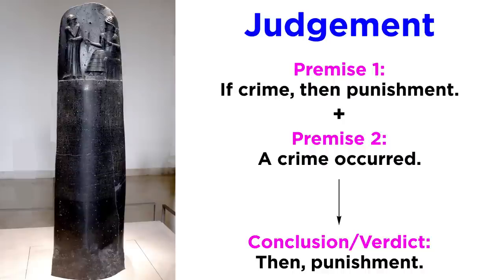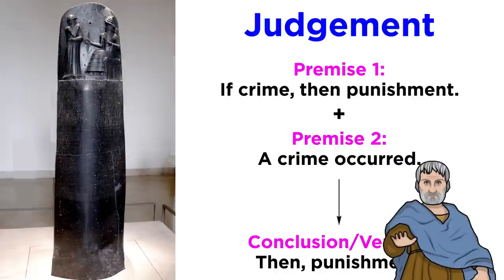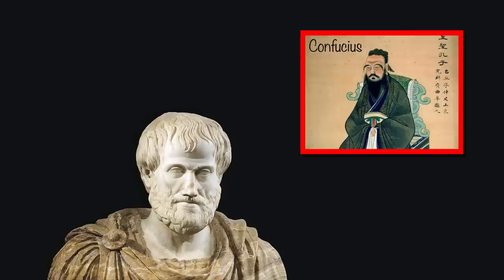When judges needed to evaluate given facts, an inference would occur toward a verdict or conclusion. The basic shape would be: 'if crime, then punishment' — the code of law; 'a crime occurred' — the fact requiring judgment; 'then punishment' — the verdict or conclusion. These codes directly influenced Greek law in which Aristotle lived centuries later, potentially influencing his ideas. On the other hand, although Confucius preceded Aristotle by a couple of centuries, not much of Chinese philosophy seems to have reached Greece by his time.